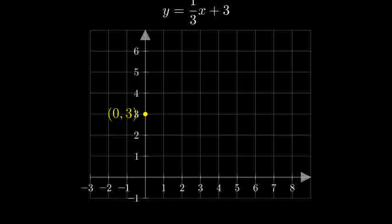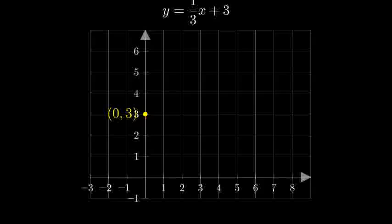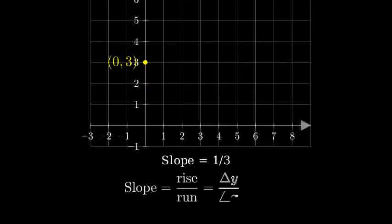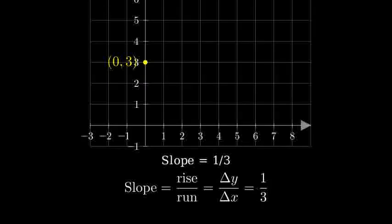Now let's use the slope to find another point. A slope of one-third means that for every three units we go right, we go up one unit. This is because slope equals rise over run, or change in y over change in x. So from our y-intercept, if we go right three units and up one unit, we reach the point (3, 4).